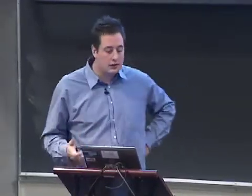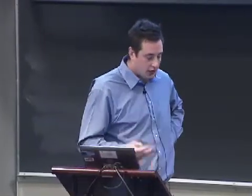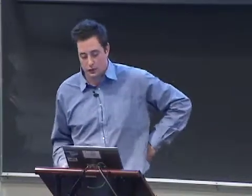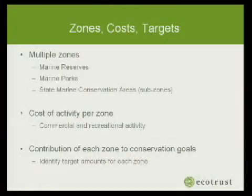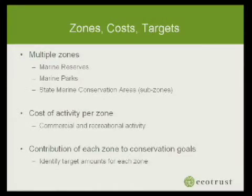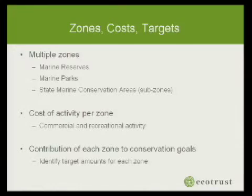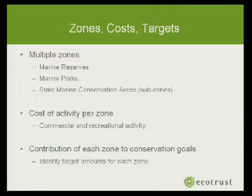To reiterate, the main things you have to address when using Marxan with zones: you have to clearly define your zones — in this case as reserves, parks, and conservation areas. This is the key point: you really have to define what your zones are. If you can't define your zones, don't bother using Marxan with zones — just use Marxan, or don't use anything at all until you figure out what you're zoning for.